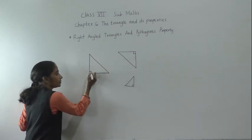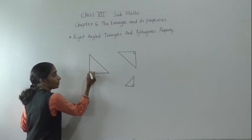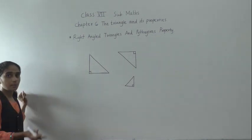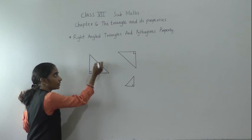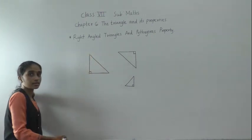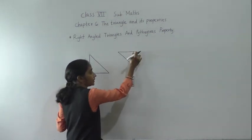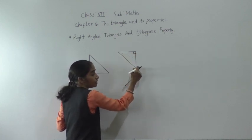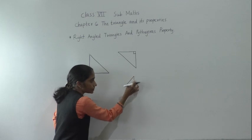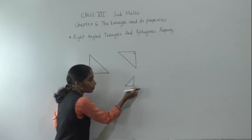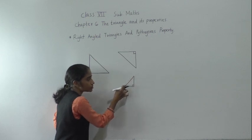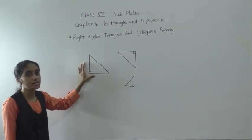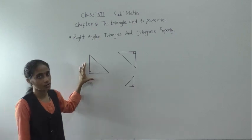This is a 90 degree angle, and opposite to this 90 degree angle we have this side, so this side is the hypotenuse. In this triangle, the 90 degree angle is here — the side opposite to it is the hypotenuse. And the remaining two sides we call the legs of that triangle or sides of that triangle.